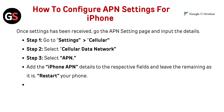How to configure APN settings for iPhone. Once the setting has been received, go to the APN settings page and input the details. Step 1: Go to Settings, then Cellular. Step 2: Select Cellular Data Network. Step 3: Select APN — uscellular.com/webenc. Add the iPhone APN details to the respective fields and leave the remaining as is. Now restart your phone.